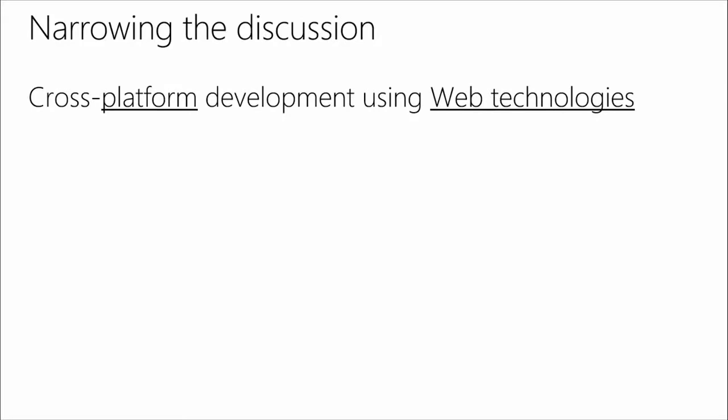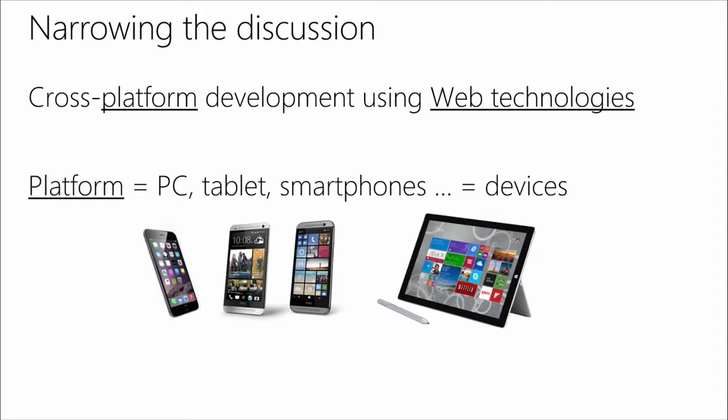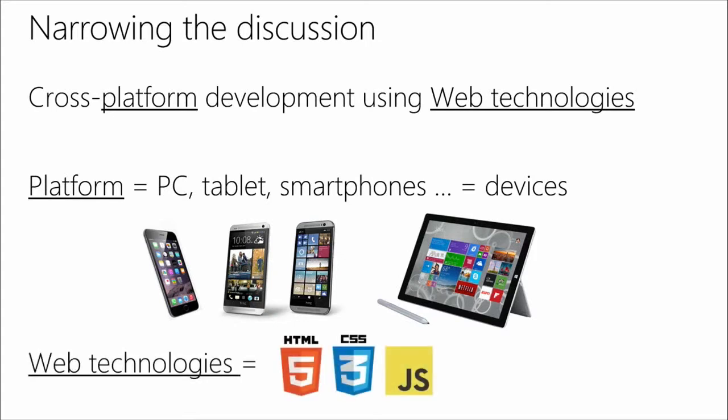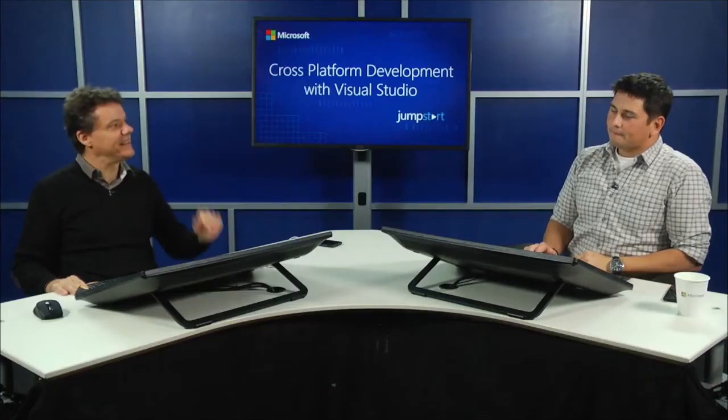Cross-platform development using web technologies — why and what does that mean? We want to narrow the discussion. When we talk about cross-platform development in our case today, cross-platform means devices: iOS, Android, Windows Phone, Windows — consumer platforms. We're not yet extending to IoT or whatever else. And when we talk about web technologies, we're talking about CSS, HTML5, and JavaScript. The word you'll hear again and again is web standards — very important.